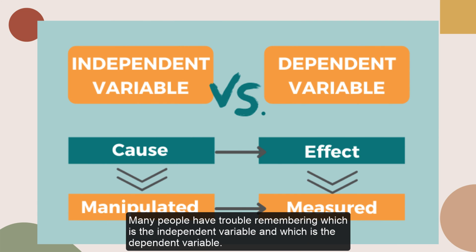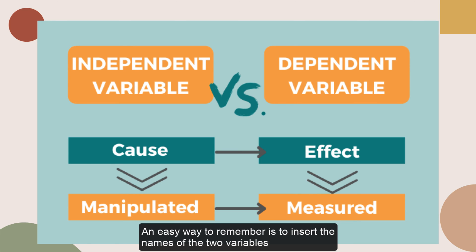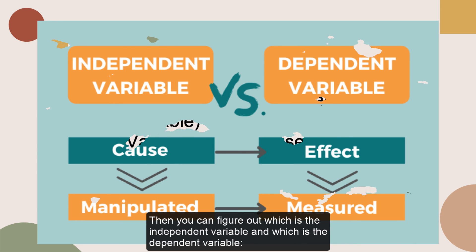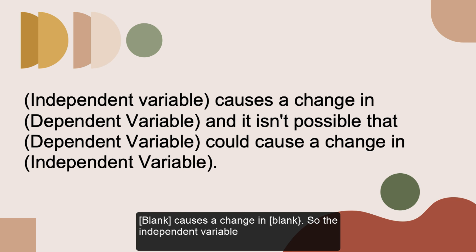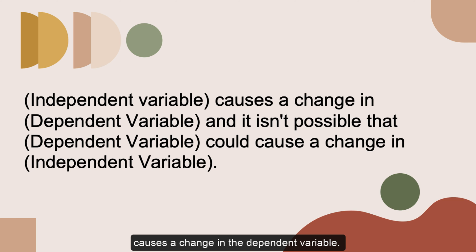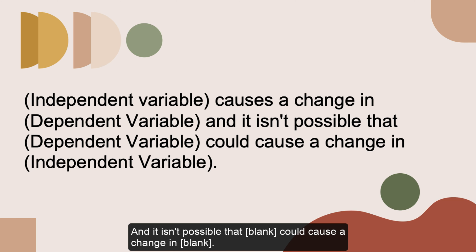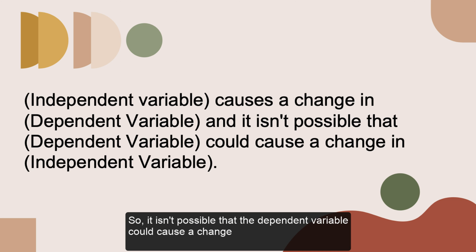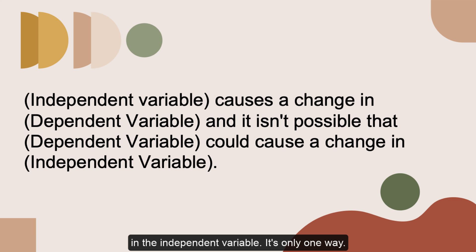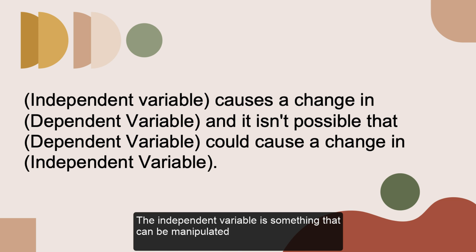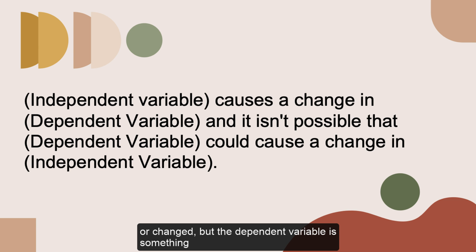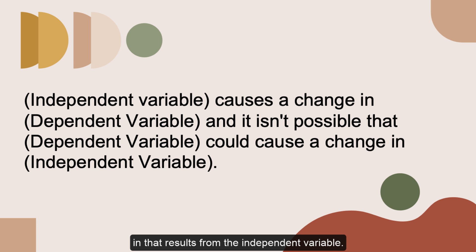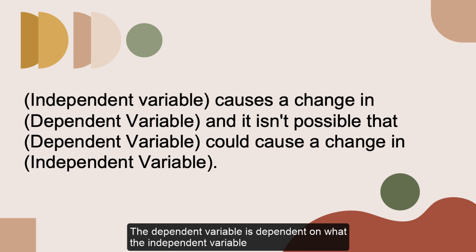Many people have trouble remembering which is the independent variable and which is the dependent variable. An easy way to remember is to insert the names of the two variables into the following sentence in a way that makes the most sense: 'Blank causes a change in blank.' So the independent variable causes a change in the dependent variable, and it isn't possible that the dependent variable could cause a change in the independent variable. It's only one way. The independent variable is something that can be manipulated or changed, but the dependent variable is something that results from the independent variable — the dependent variable is dependent on what the independent variable is doing.